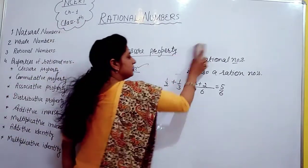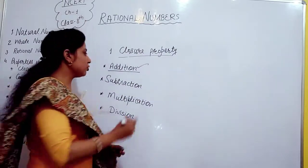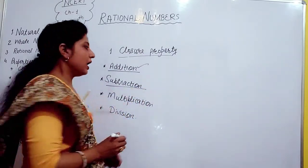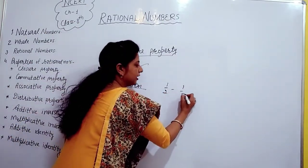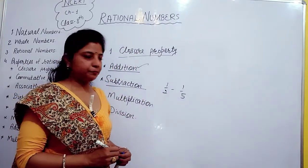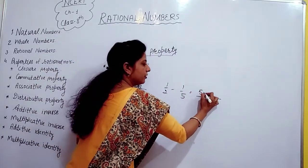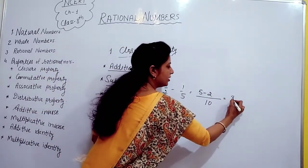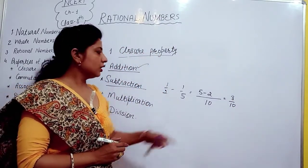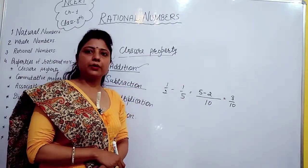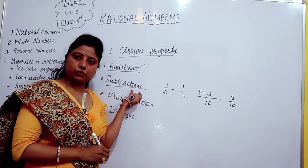Next we discuss subtraction. Our two rational numbers are 1/2 and 1/5. LCM is 10, so 5 minus 2 equals 3/10. Is 3/10 a rational number? Yes, of course. So we can say that closure property holds on subtraction also.